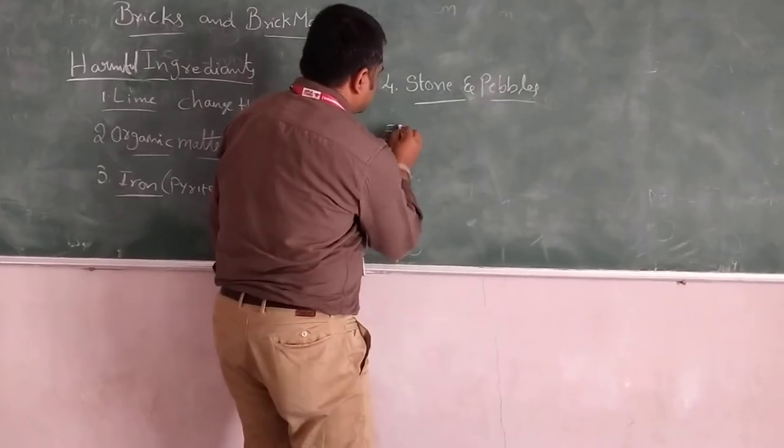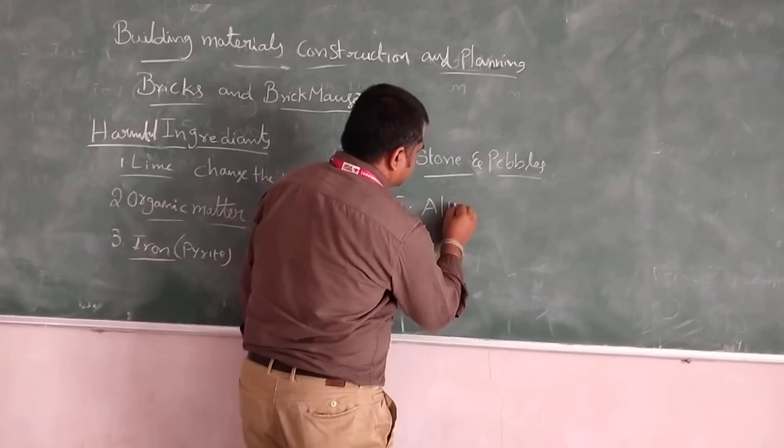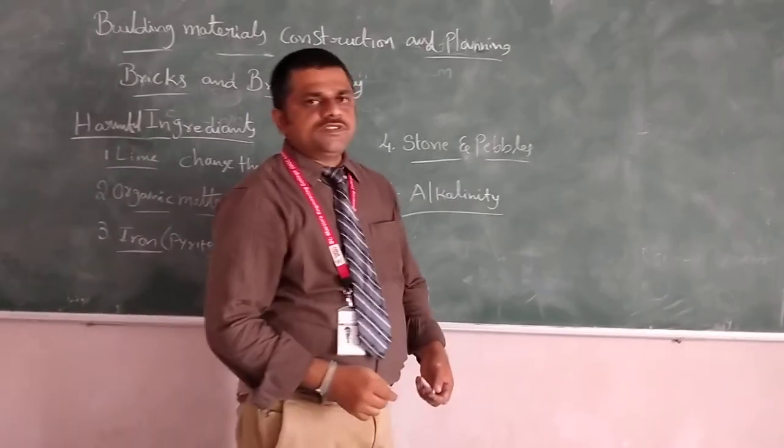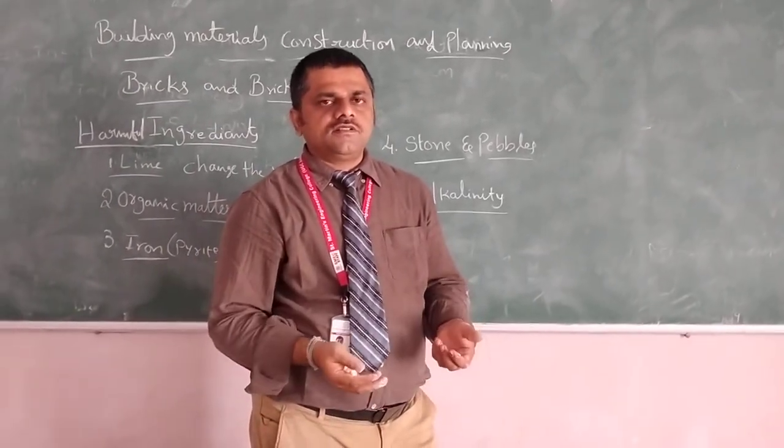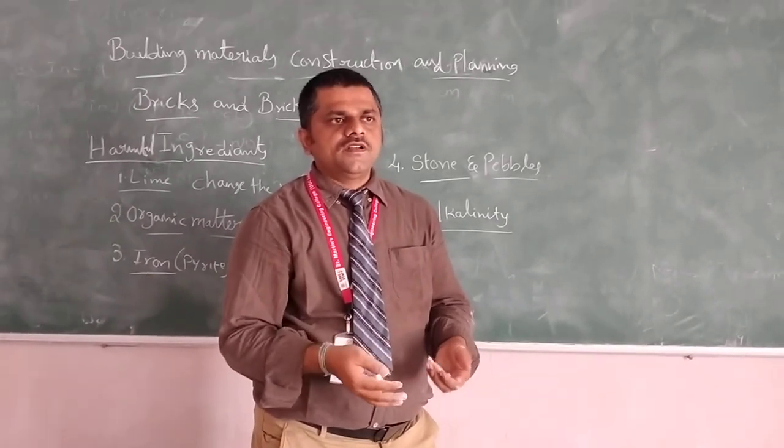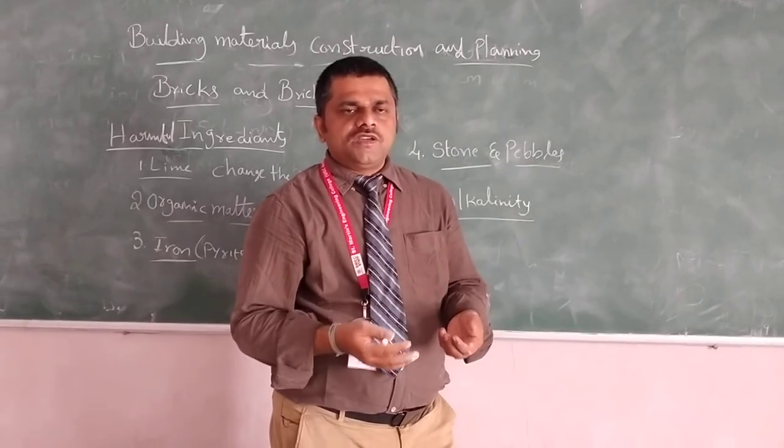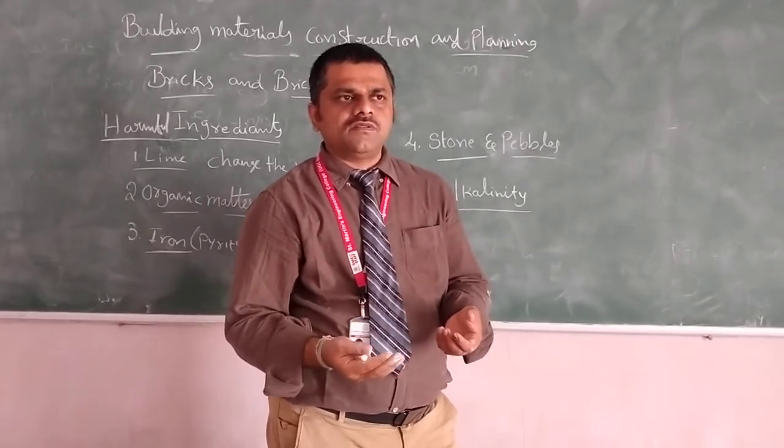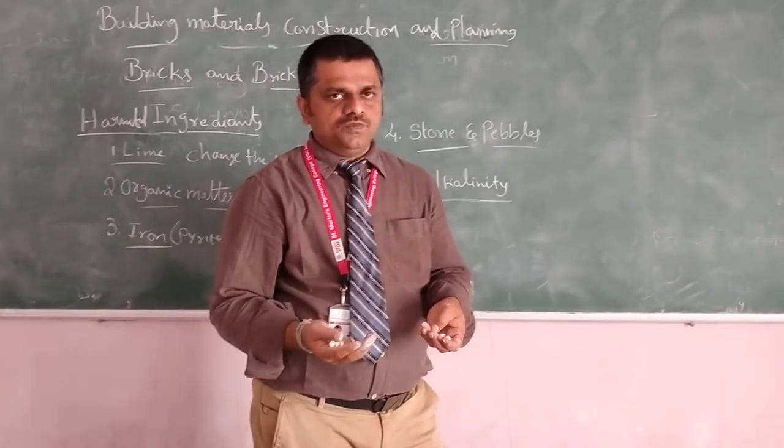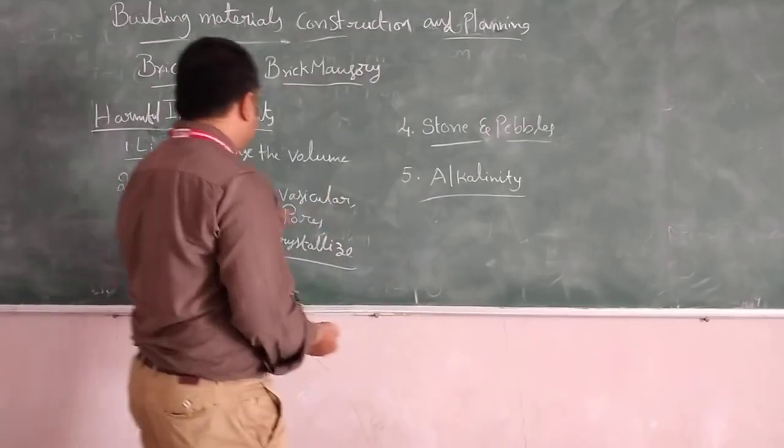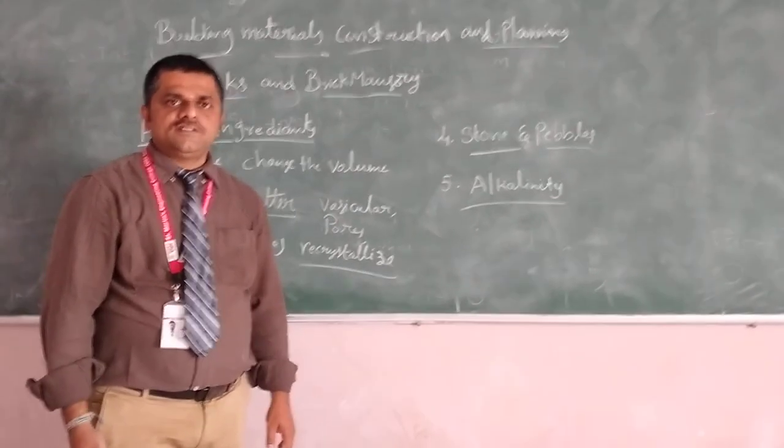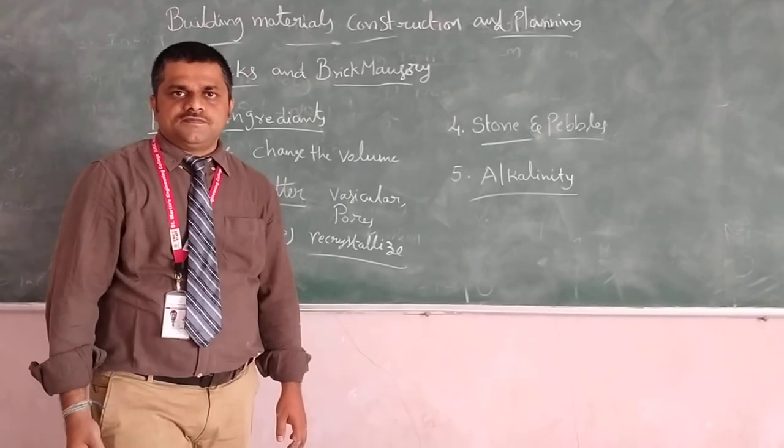Last one is alkaline. It shows the fluorescence. While we make bricks, we have to add some water. That water should be pH normal, somewhat acidity as well, not a problem. If it is alkaline, more alkalinity, it can convert into blue fluorescence. These are the harmful ingredients. Today's session we covered the ingredients and harmful ingredients. Thank you for listening.